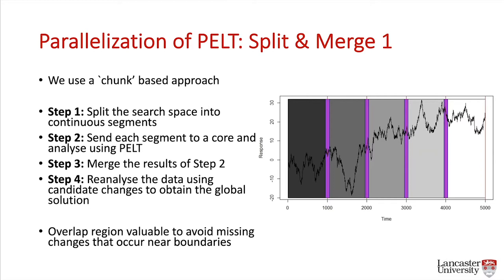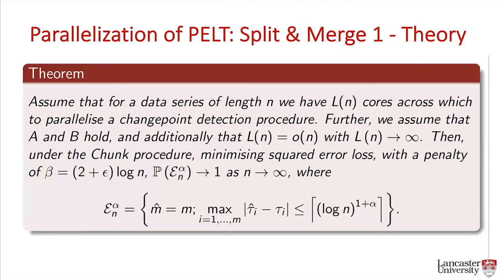In practice, having some overlap regions was valuable to avoid missing changes near boundaries. There's a theorem we established which shows that the solutions converge to the true change points as the number of data points increases — so it behaves as we would like it to. Just because we can split in a certain way doesn't guarantee theoretical properties, but this theorem gives us the guarantees we need.